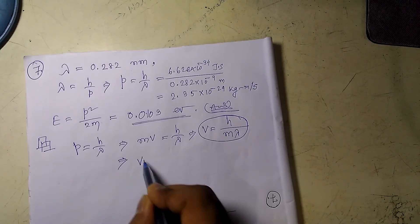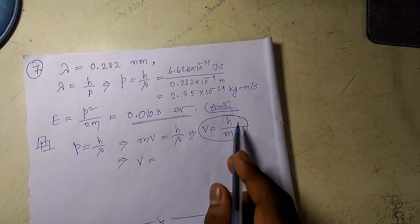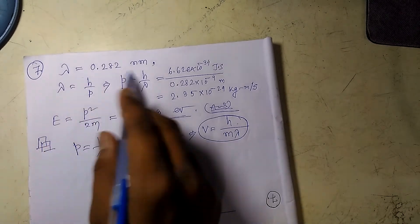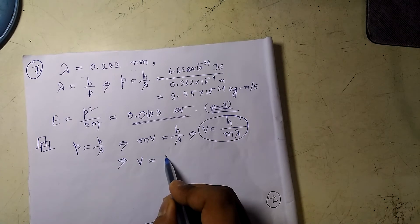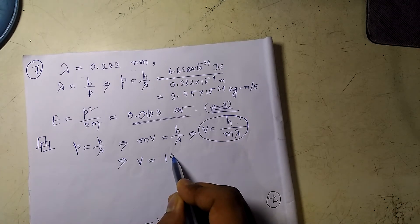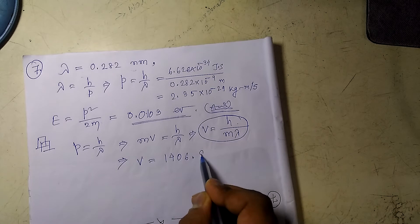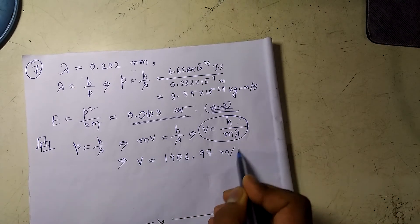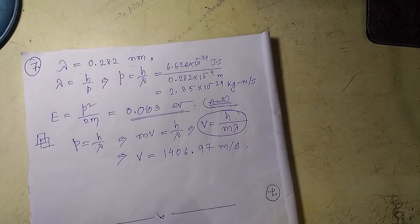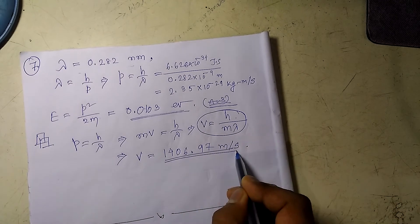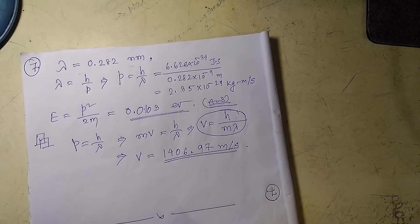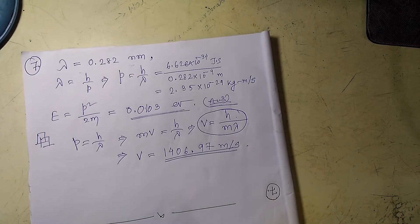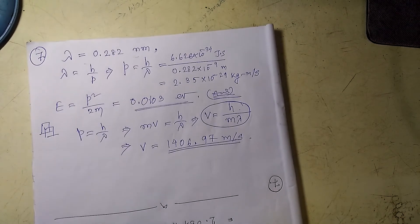And again if I put the value of H, M and lambda which is given here, we will get the value approximately like 1406.97 meter per second. And you can see this is a very very small value compared to the speed of light, which is 3 times 10 to the power 8 meter per second.